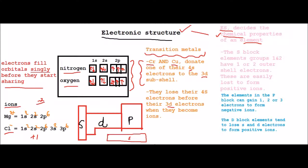The next fact that we need to know is that the S block elements, groups 1 and 2, have 1 or 2 outer shell electrons and these are easily lost to form positive ions. So this is the S block over here, and this is the fact that you need to know about the S block.